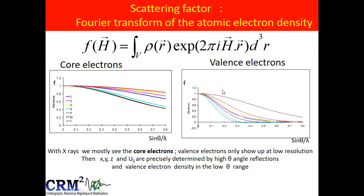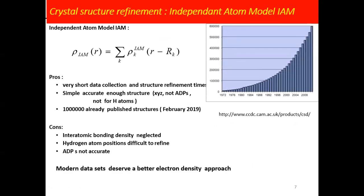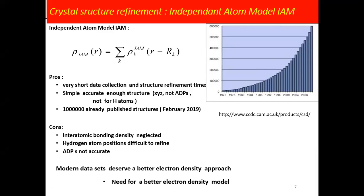When people do what we call a crystal structure determination, they use a very simple model called the IAM model — the independent atom model. The electron density in the unit cell is the sum of all atoms of the spherical, non-perturbed, free electron density. This means you can do very fast structural refinement. It is simple but accurate enough for crystal structure. You can get good coordinates, but only for non-hydrogen atoms. You can see almost one million already published crystal structures. The problem is that with this simple model you cannot see interatomic bonding, it's difficult to see hydrogen atoms, and the anisotropic displacement parameters due to temperature are not accurate. We now have very good detectors which enable us to go much further.